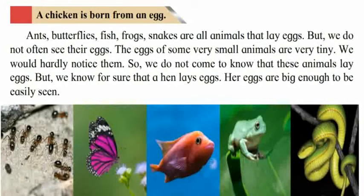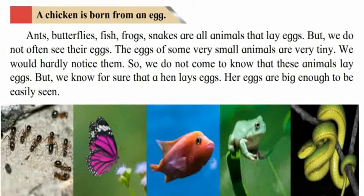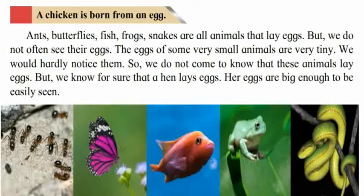The eggs of some very small animals are very tiny. What do you mean by the word tiny? Very small. You can note down the meanings of the words. We would hardly notice them, so we do not come to know that these animals lay eggs. The ant, butterfly, fish, frog, and snake lay eggs, but we have hardly — in fact never — seen them because they are very small in size.